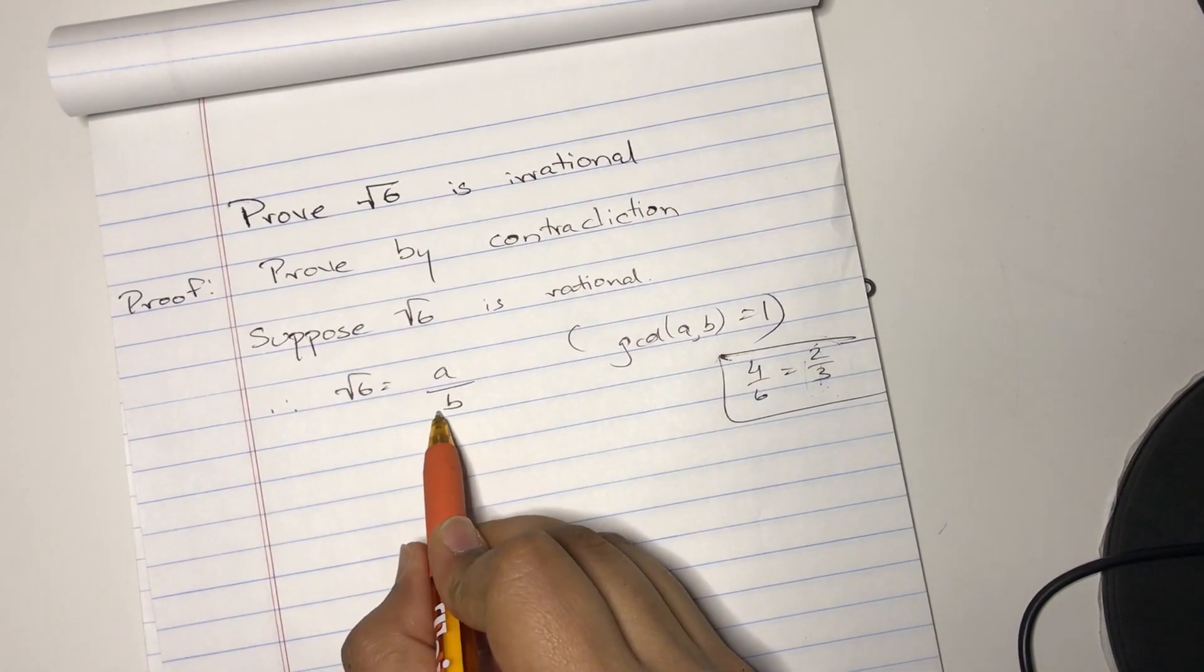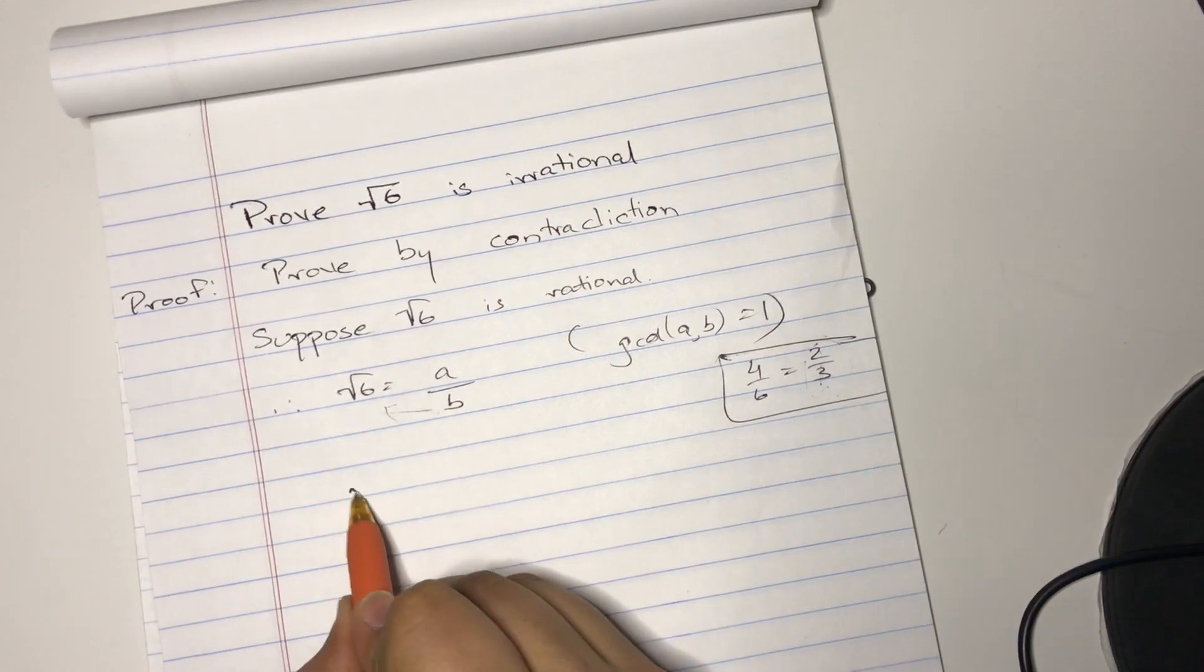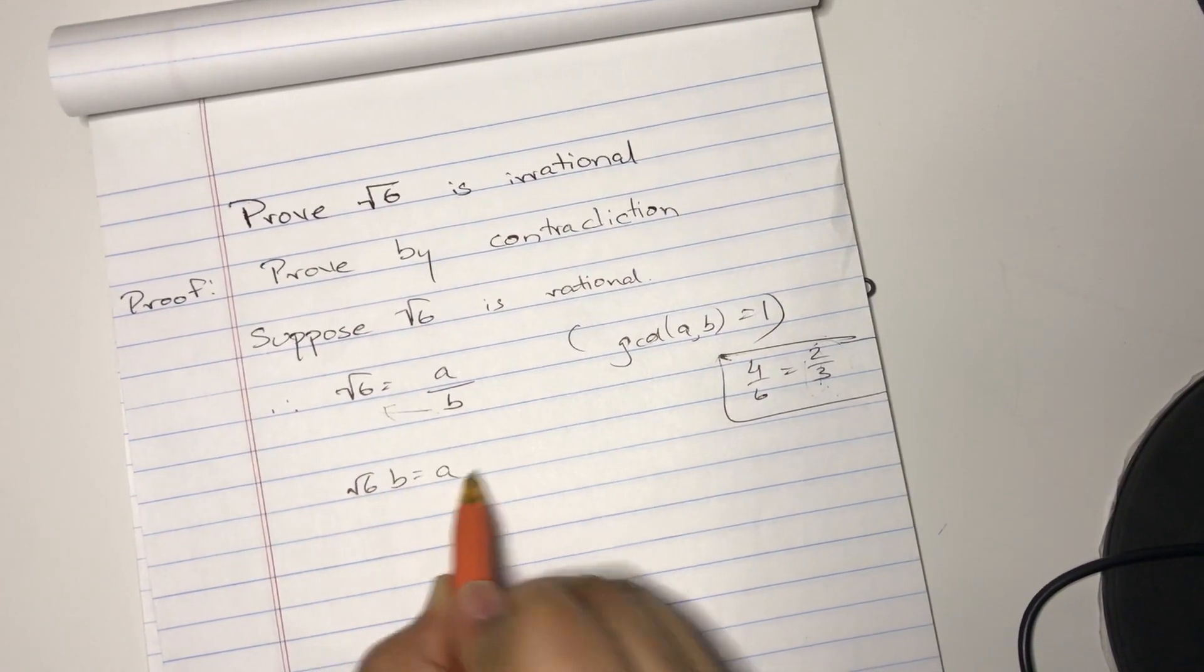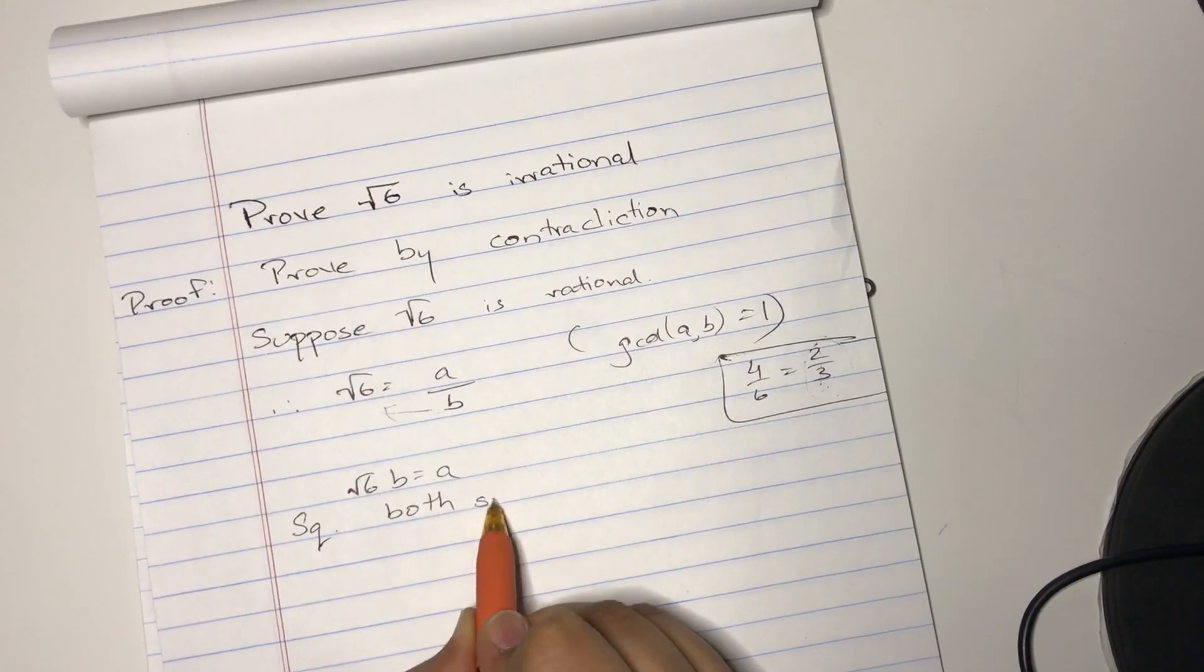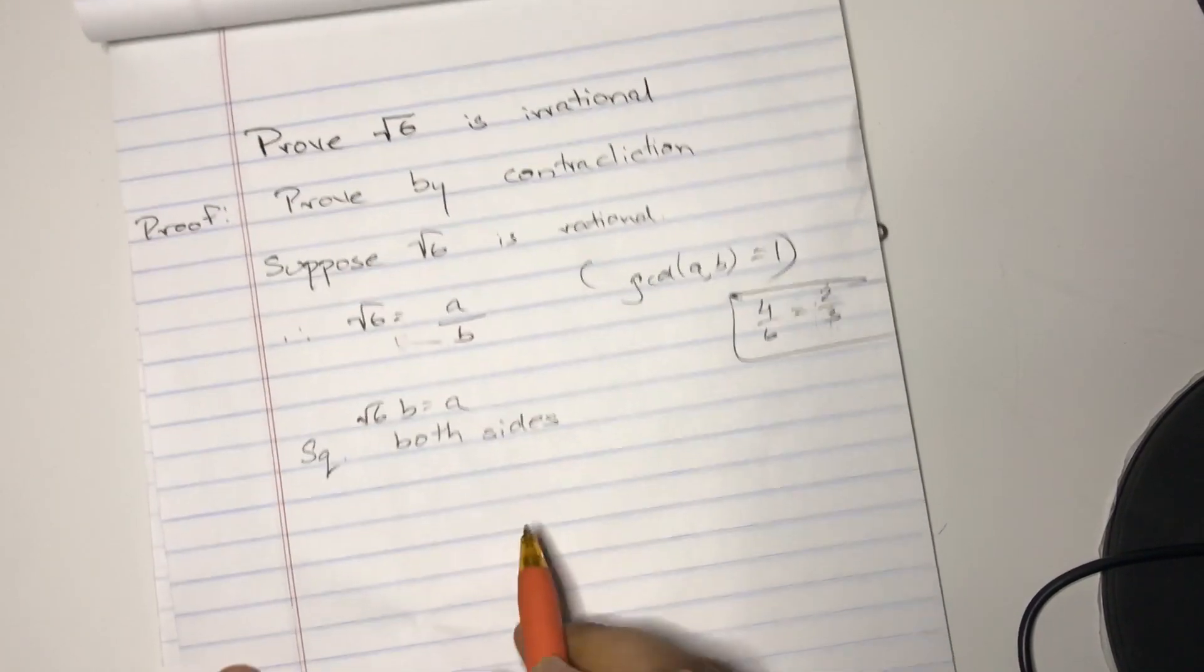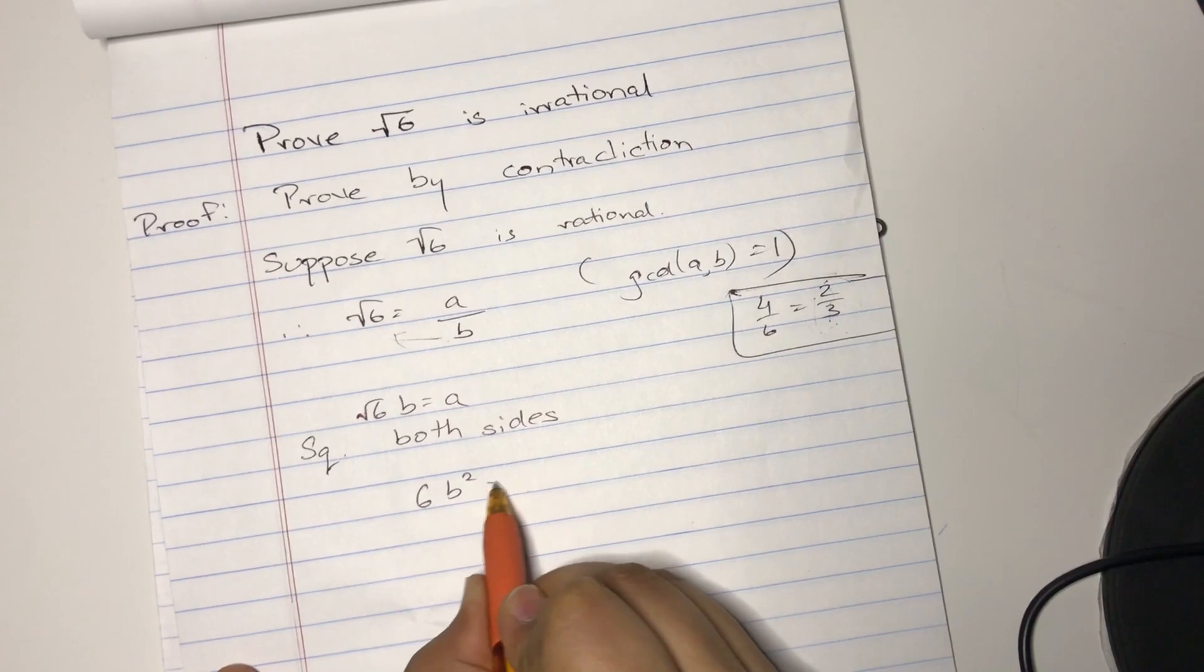So I'm just going to cross multiply. So square root of 6 times B equals A. And I'm going to square both sides next. So 6B² equals A².